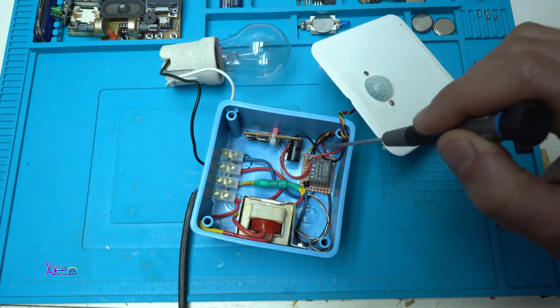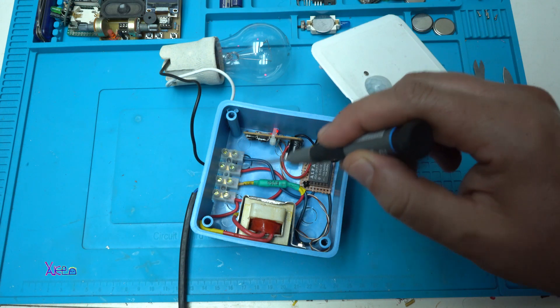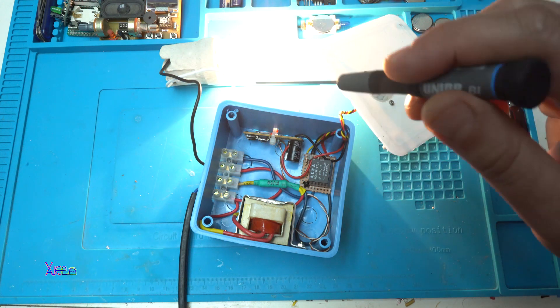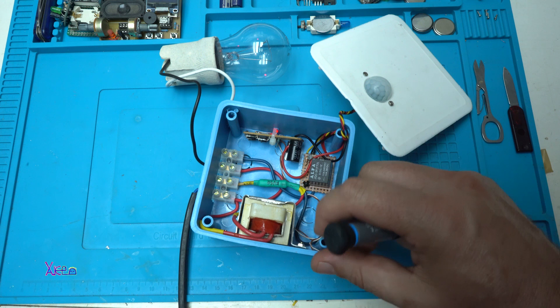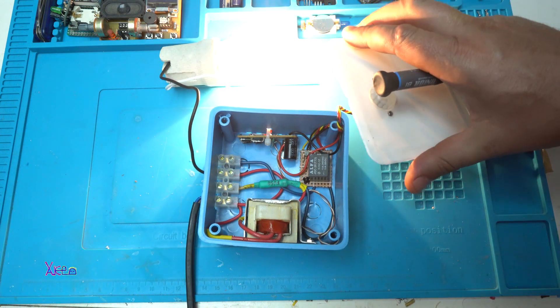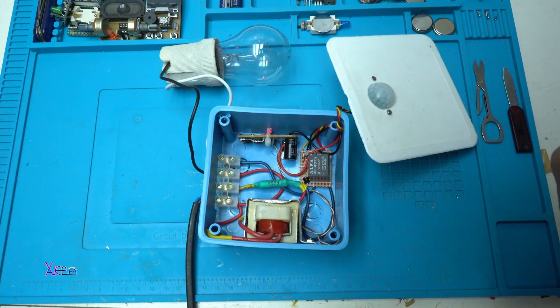And from here it powers the module and the relay. Here we have an electric socket for connecting the mains AC and controlling the bulb. This will be for my garden and controlling a spotlight LED light.